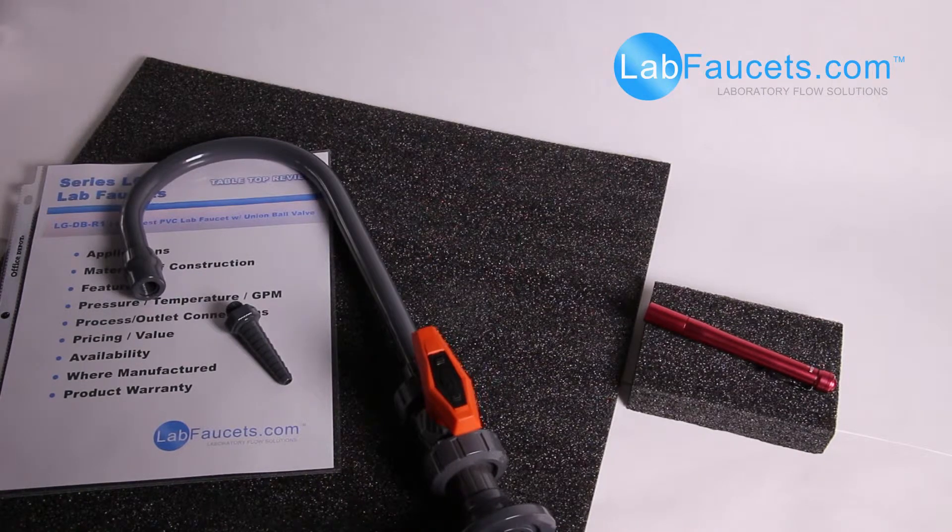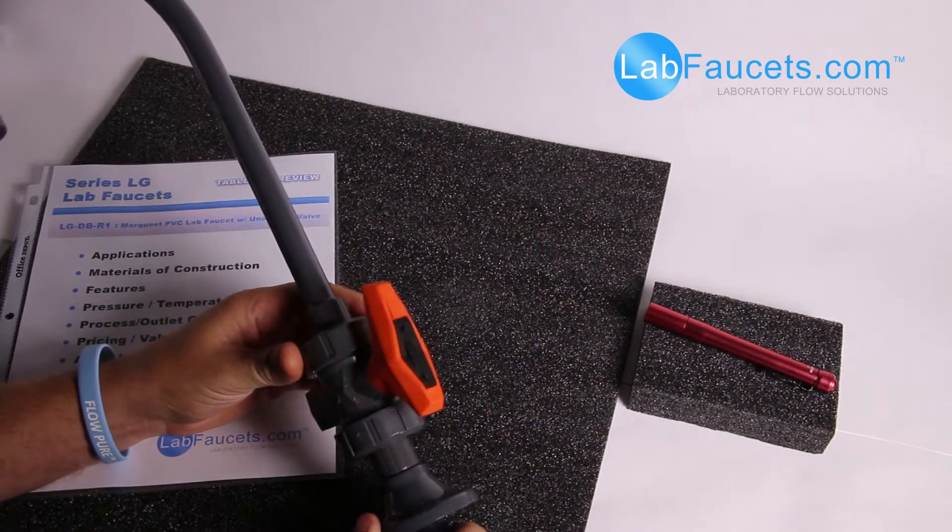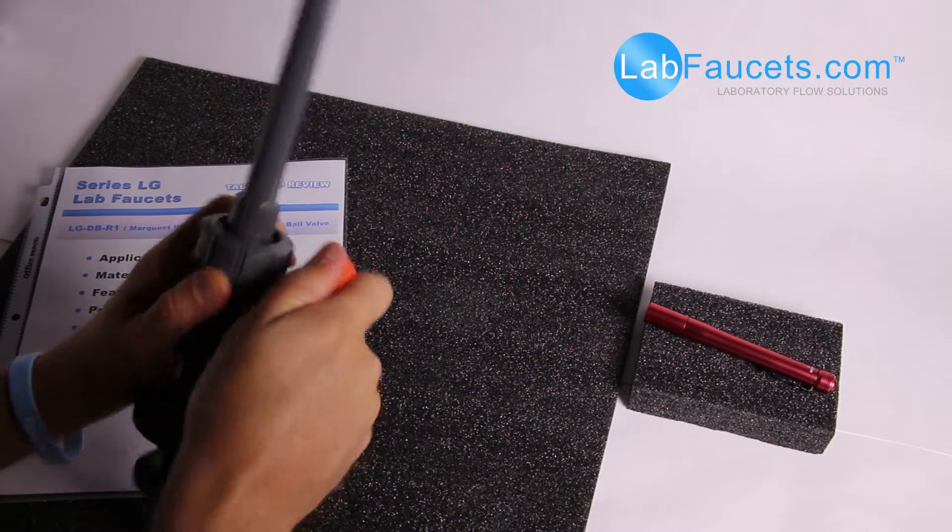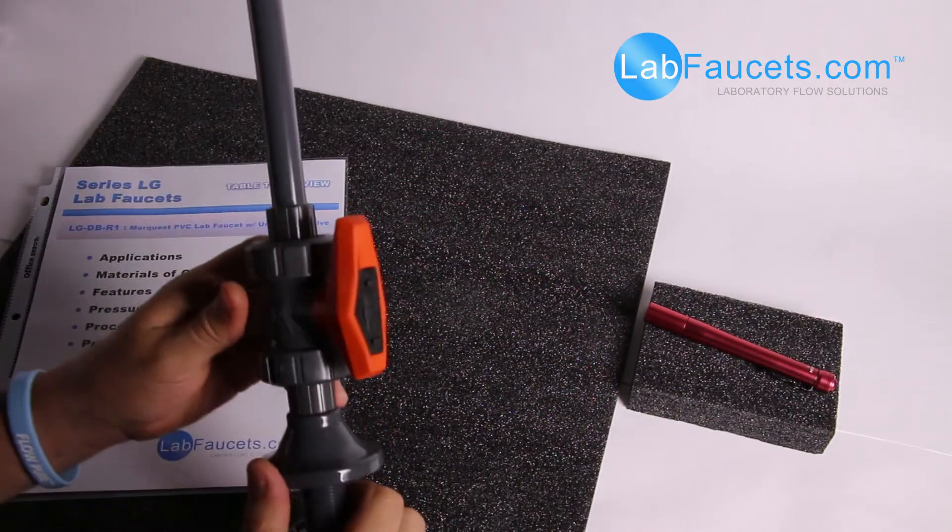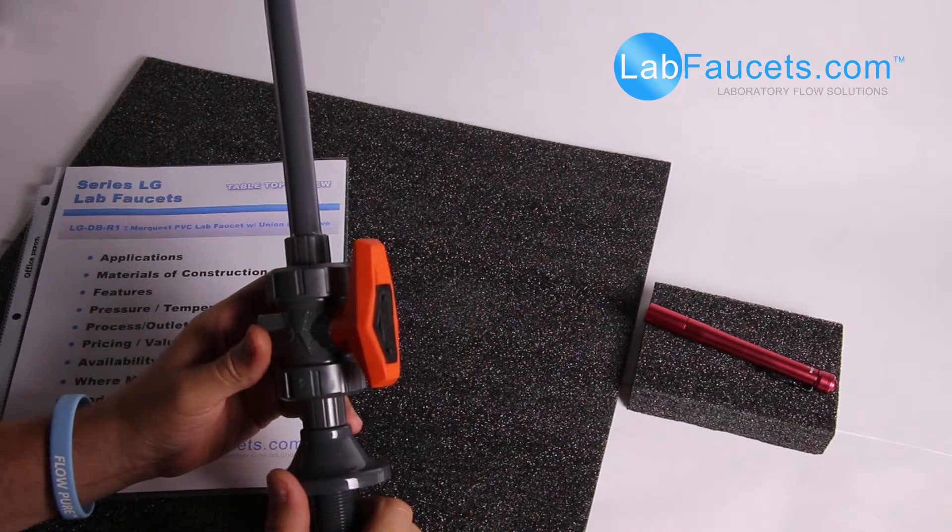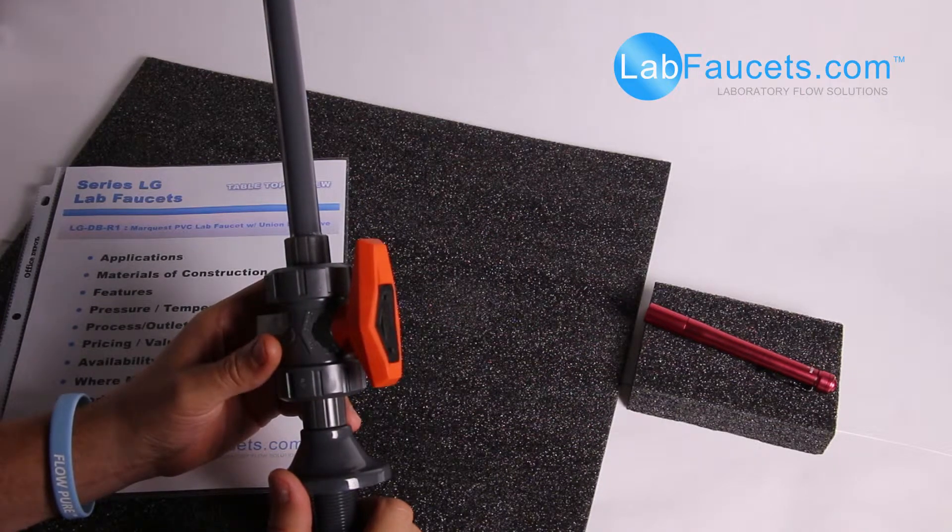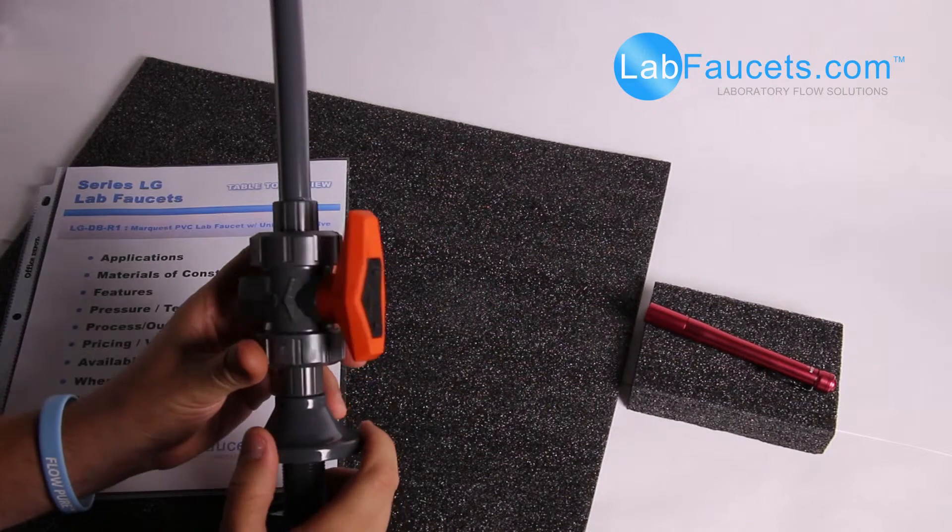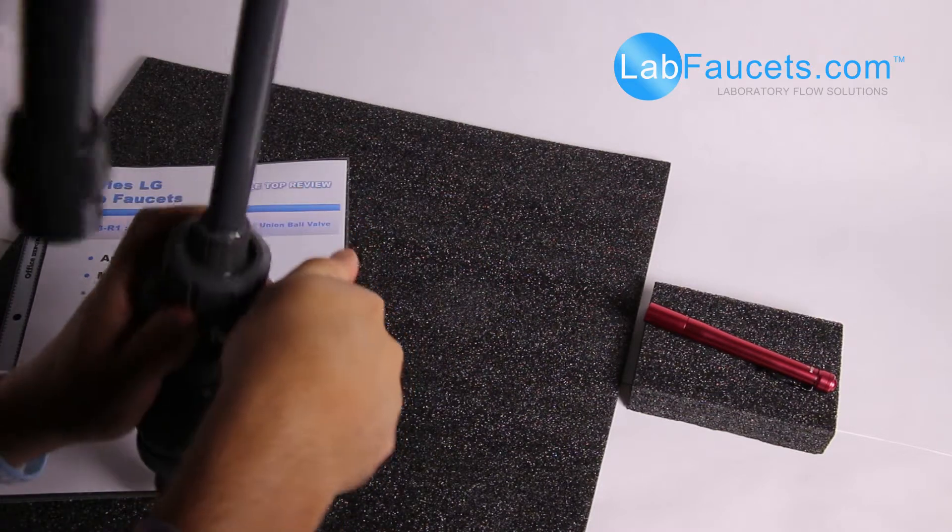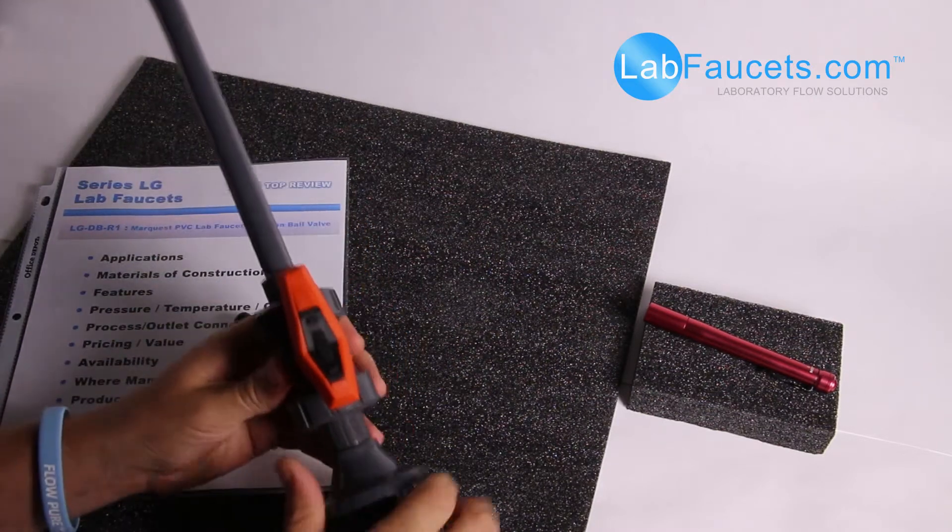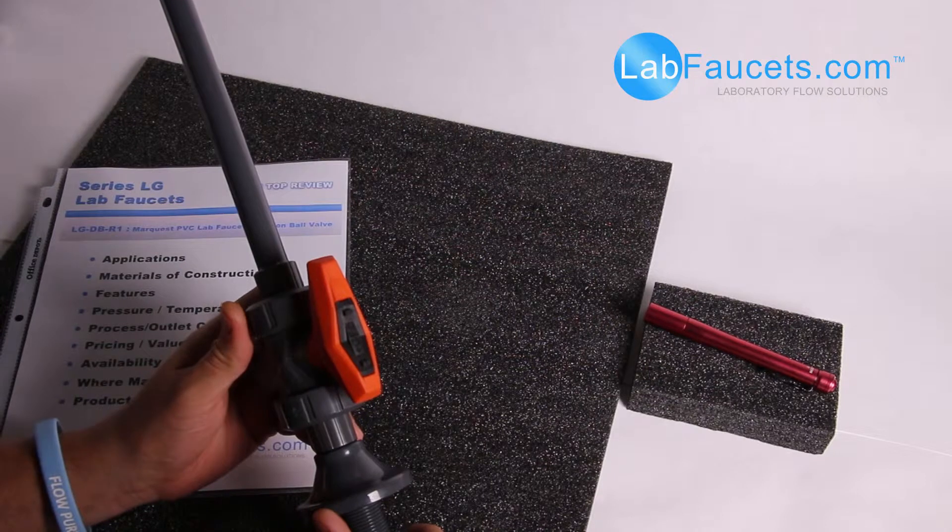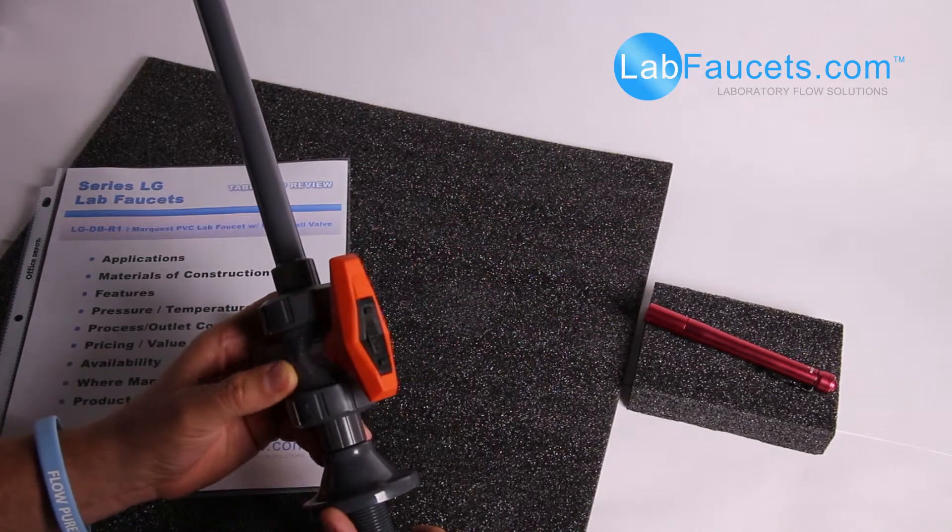Value, well, the reason there's value here is having a PVC ball valve for quarter turn on-off. What happens in the industry is a lot of DI water, PVC lab faucets will use a more economical ball valve. And what happens is that ball valve is not designed to be turned on and off all day long. And what happens is the handle will basically either shear off or strip the interference connection of the handle to the stem.